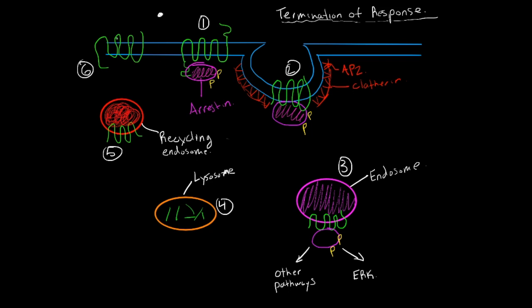In the first step, the cytoplasmic domain of the activated GPCR is phosphorylated by a specific type of kinase called a G-protein coupled receptor kinase, so I'm just going to write that as GRK, which will phosphorylate this G-protein coupled receptor.